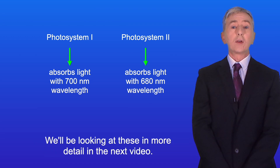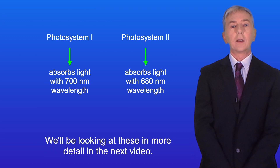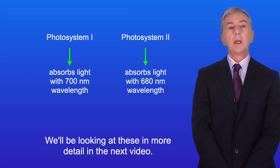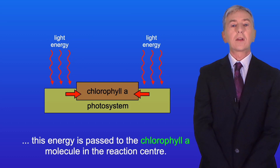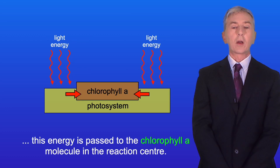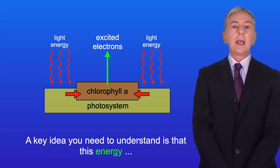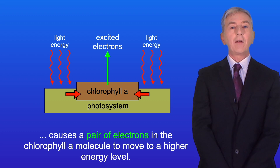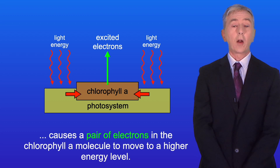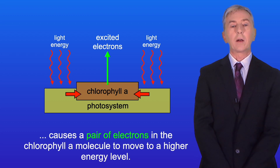We'll be looking at these in more detail in the next video. When light energy is absorbed, this energy is passed to the chlorophyll A molecule in the reaction center. A key idea you need to understand is that this energy causes a pair of electrons in the chlorophyll A molecule to move to a higher energy level.